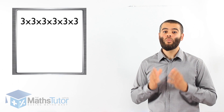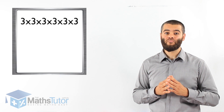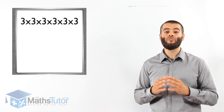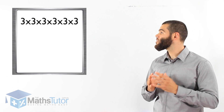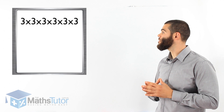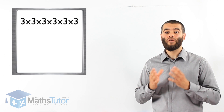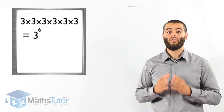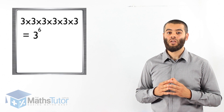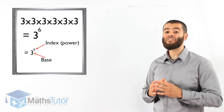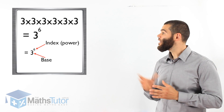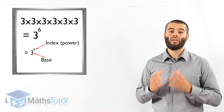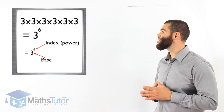How do we write it? We write it in index form, or to the power. Very simple. Because 3 times itself 6 times — 3 times 3, times 3, times 3, times 3, times 3 — we write it as 3 to the power of 6. Where 3 is the base number, and 6 is the power. 6 is the index. So to write it in simpler form, in indices form, we write it 3 to the power of 6.